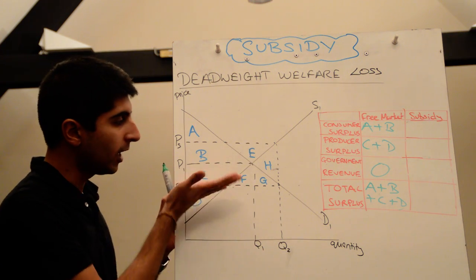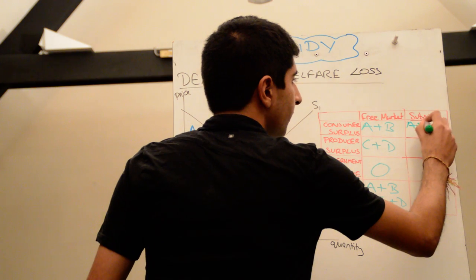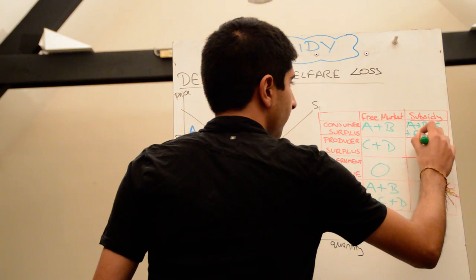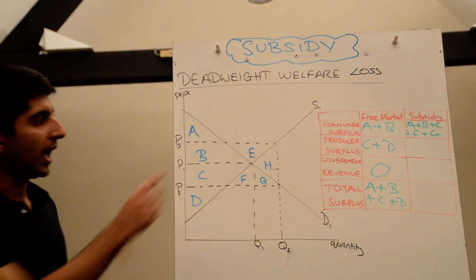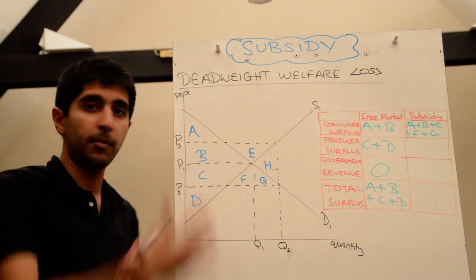So now the area below the demand curve, but above the price, is equal to A plus B plus C plus F plus G. A plus B plus C plus F plus G. That's the total area above the price, below the demand curve.